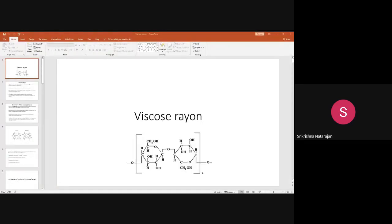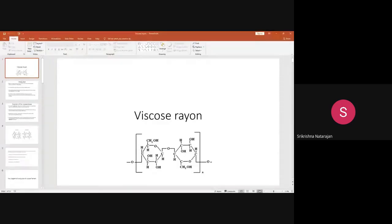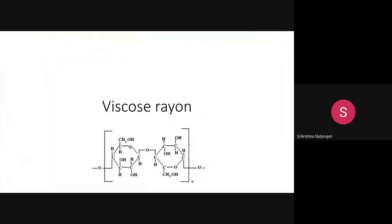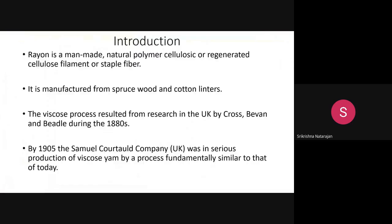Good morning students. Today's lecture topic is viscose rayon. Viscose rayon is the oldest regenerated cellulosic fiber. The raw material used for making this fiber is a natural polymer — cellulose is the natural polymer from which rayon is made.